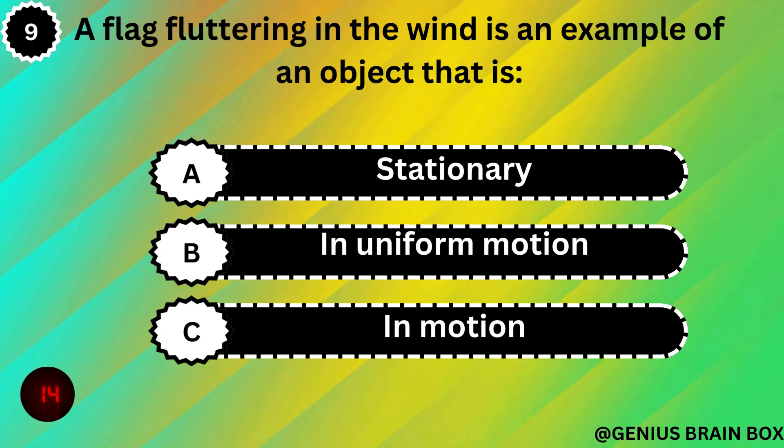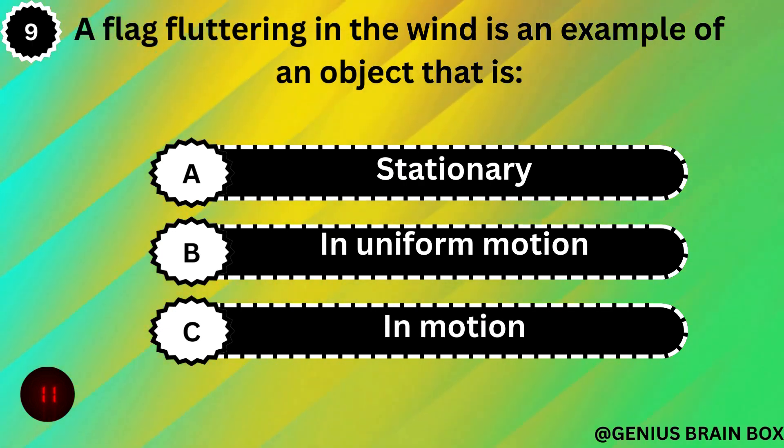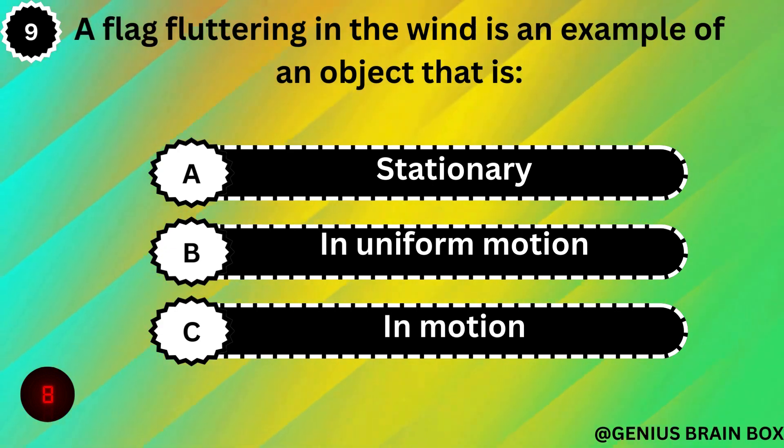A flag fluttering in the wind is an example of an object that is: stationary, in uniform motion, or in motion.